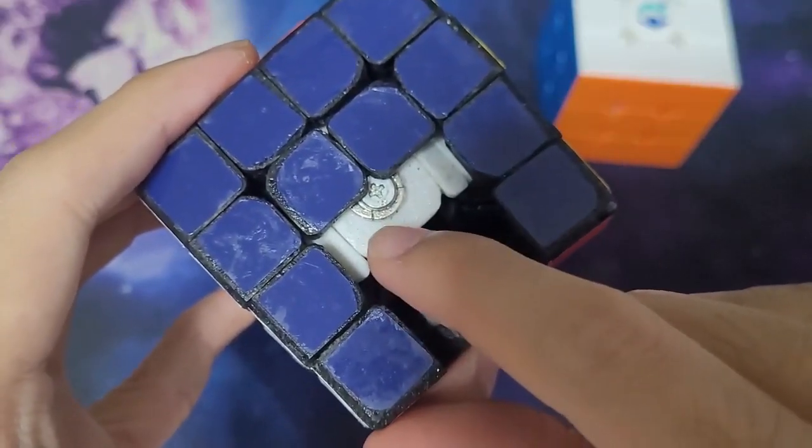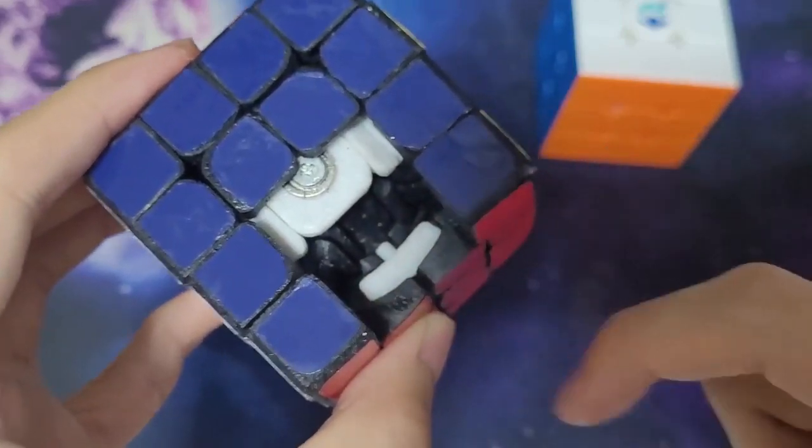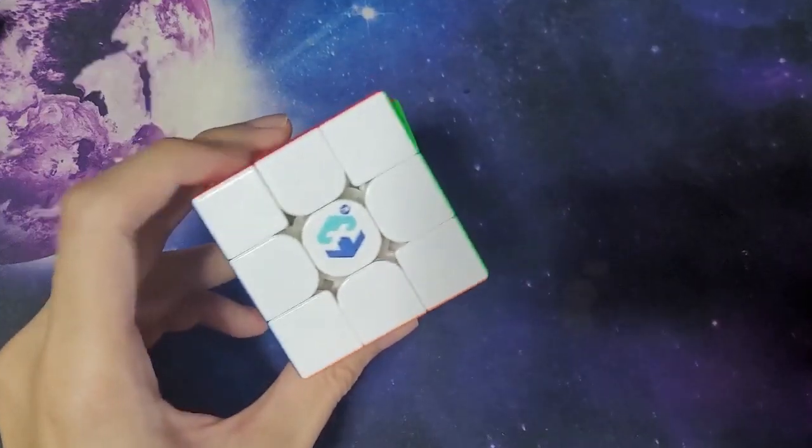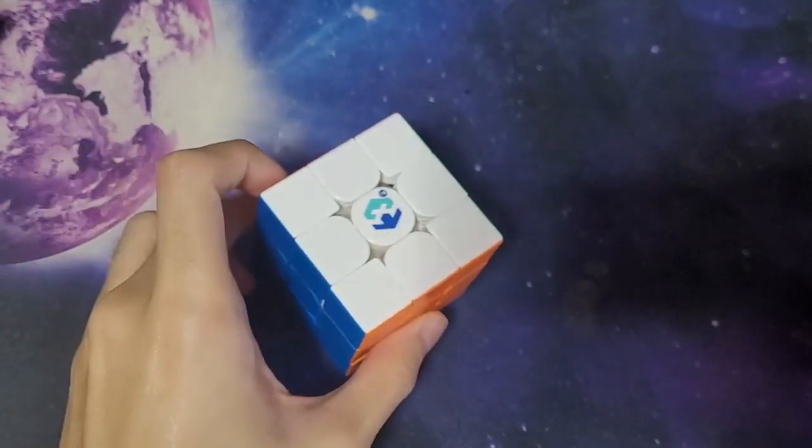In theory, it should make it weaker because now it's no longer one big magnet, it's three smaller magnets. However, I have yet to notice the difference in strength, and the MoYu TianMa isn't actually destroyed. It's still fully functional, it's just reduced to the double magnetic version.